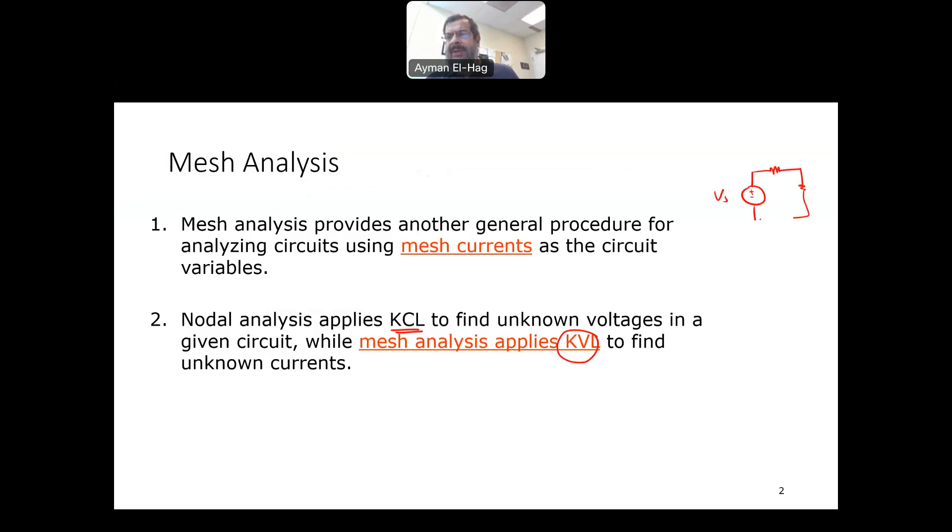Just a very quick revision: if I have this small loop with R1, R2, and a voltage supply VS, assume the current in this direction. The voltage drops are IR1 and IR2. Then apply KVL - summation of voltages in a closed loop is equal to zero. So you will have IR1 plus IR2 minus VS equal to zero. A mesh is a loop which does not contain any other loops within it.